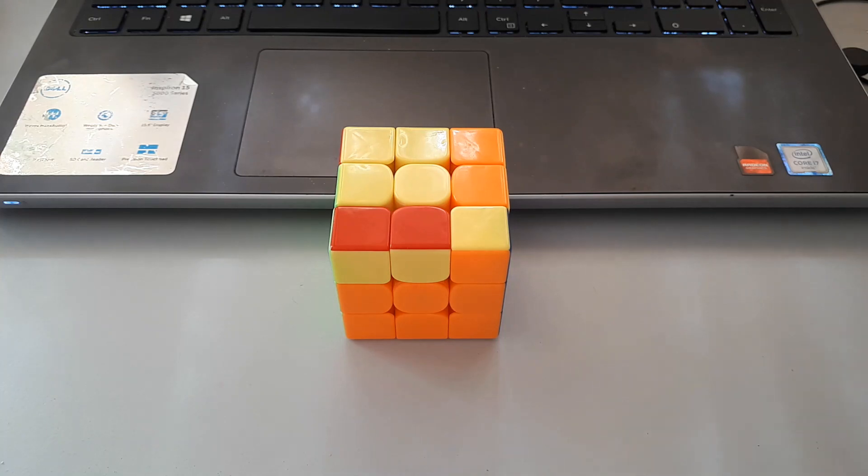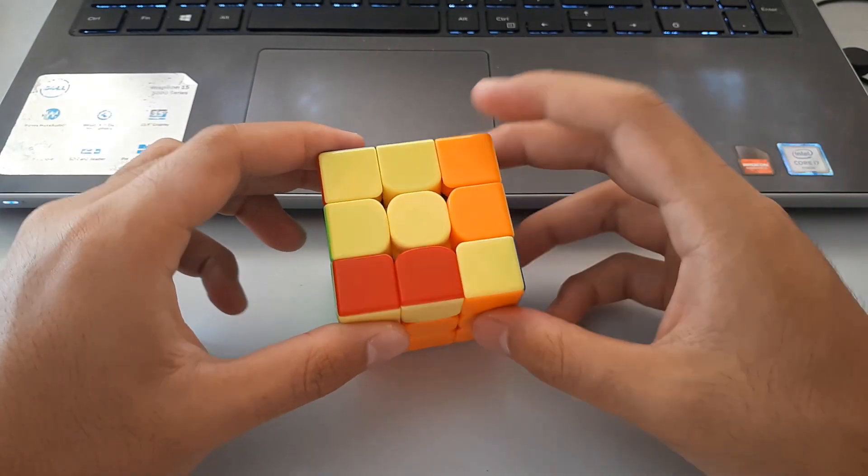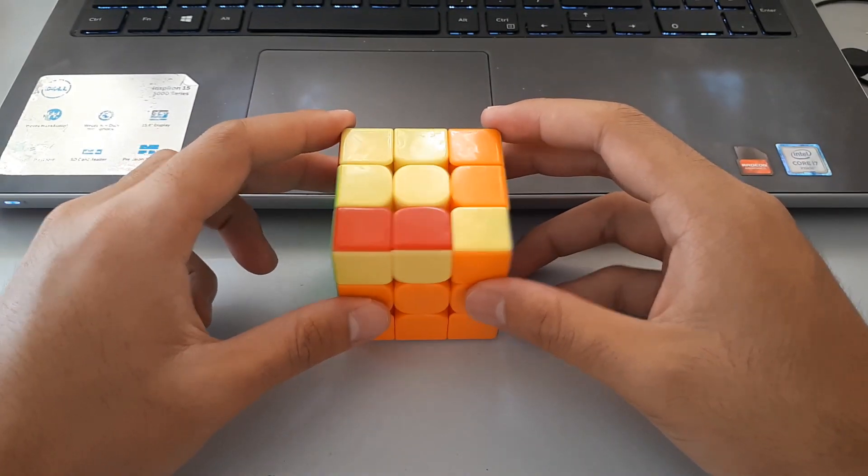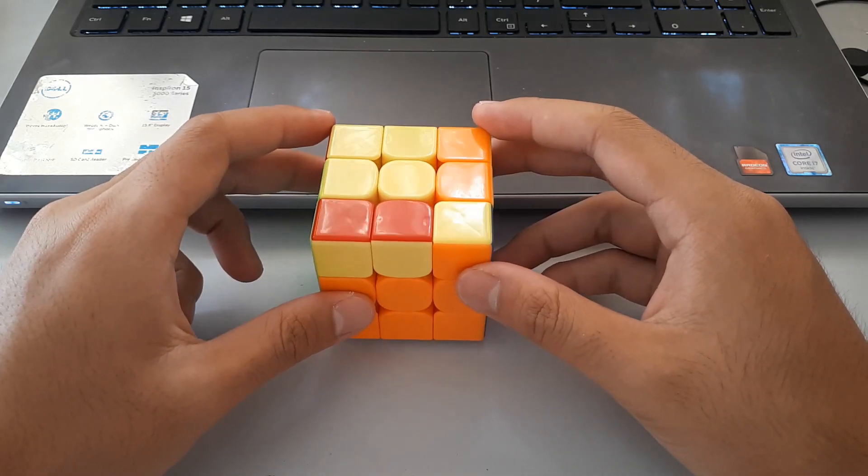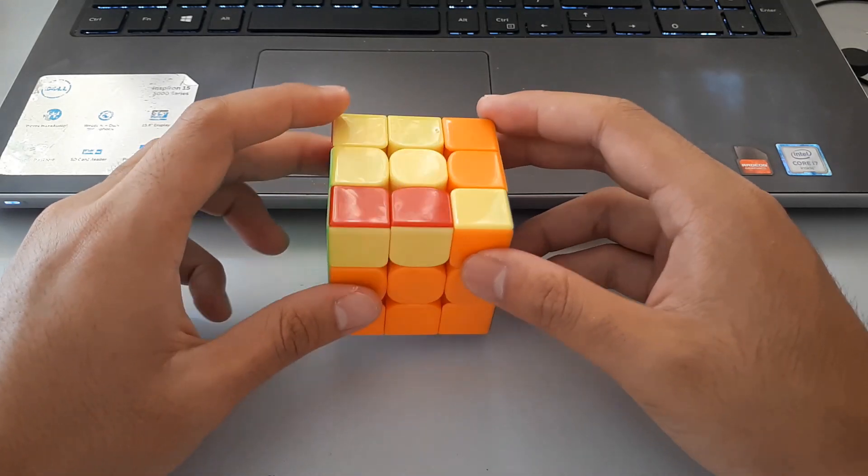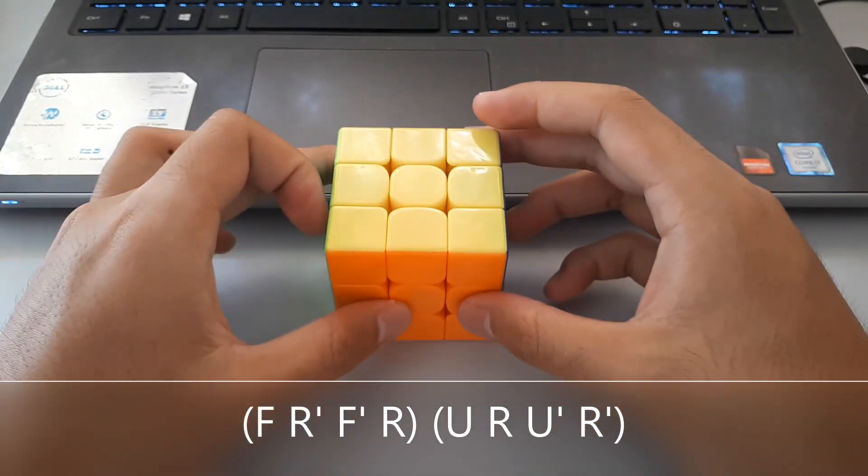Moving on to some fish shapes. I guess they're called fish shapes because this sort of looks like a fish. Anyway, this algorithm is also pretty easy to recognize. It's actually inverse sledge, and then followed by inverse sexy, like that.